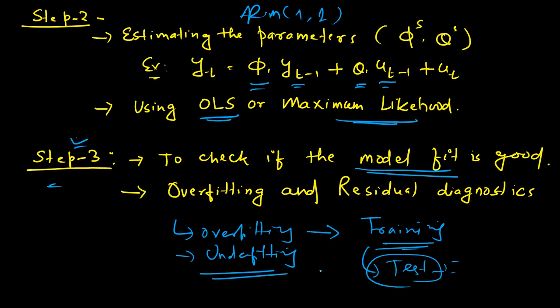The other one is underfitting - that means you are not properly specifying or you are not able to capture the pattern in the data. That will result in a problem known as the autocorrelation of the error, autocorrelation of error terms.